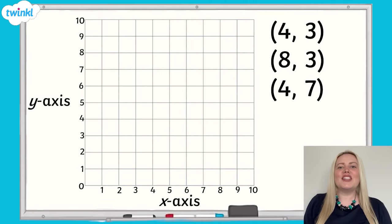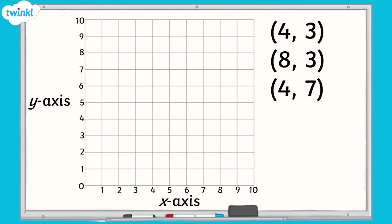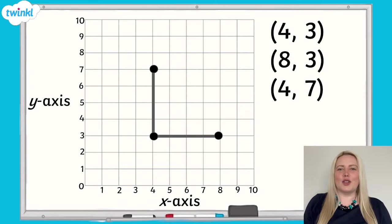Look at this set of coordinates. These are the coordinates for three of the vertices of a square. The fourth vertex is missing. If we plot these coordinates and join the points together, you can see two of the sides of the square. What do you think the coordinates are for the point that's missing?